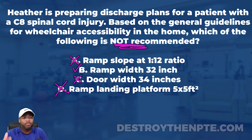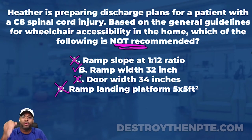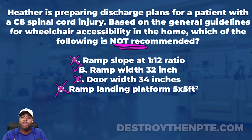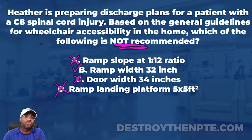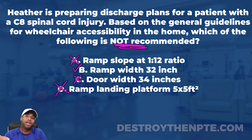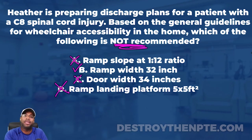These are the key numbers to know about wheelchairs and ramps. Ramp slope: 4.8 degrees, also expressed as a 1 to 12 ratio — for every inch of rise, 12 inches of run. Ramp width: at least 36 inches, can be greater. Door width: a lot of people say 28 or 30 inches, but the minimum is 32 inches — anything more is great but it needs to be at least 32. And the ramp landing platform: 60 inches by 60 inches, or 5 by 5 feet — that's the rest space for the patient.